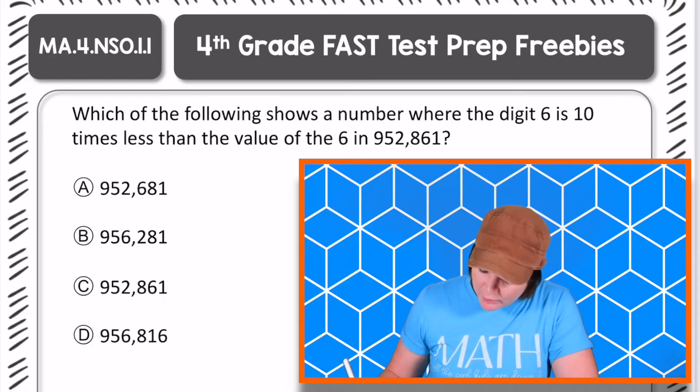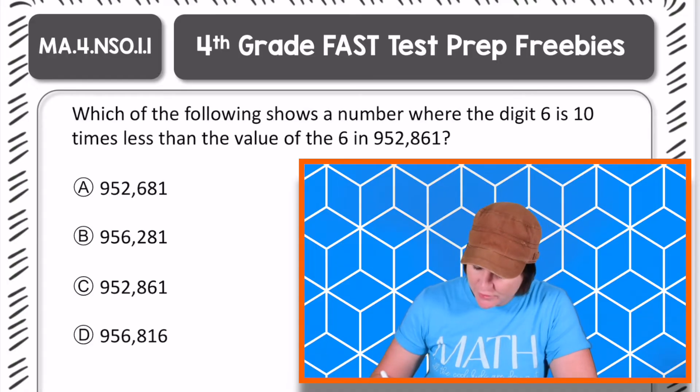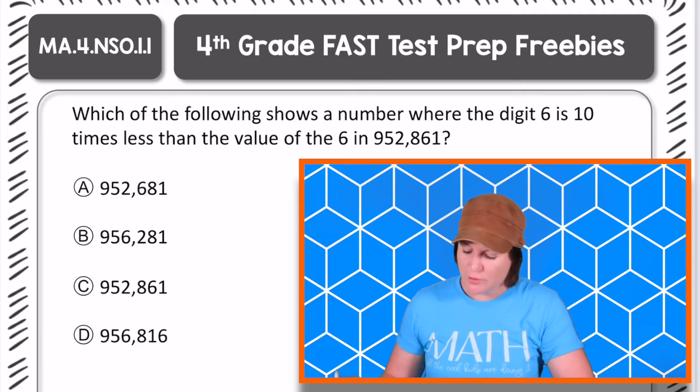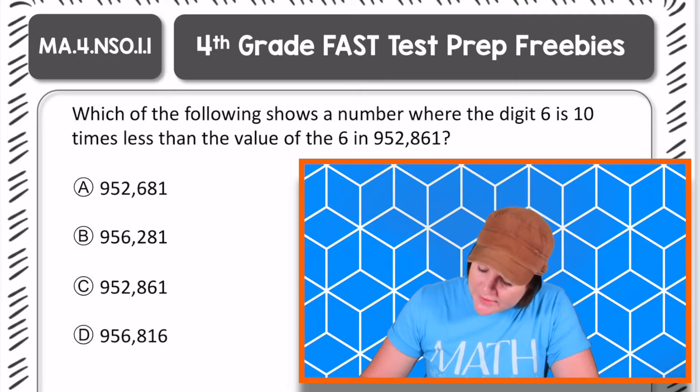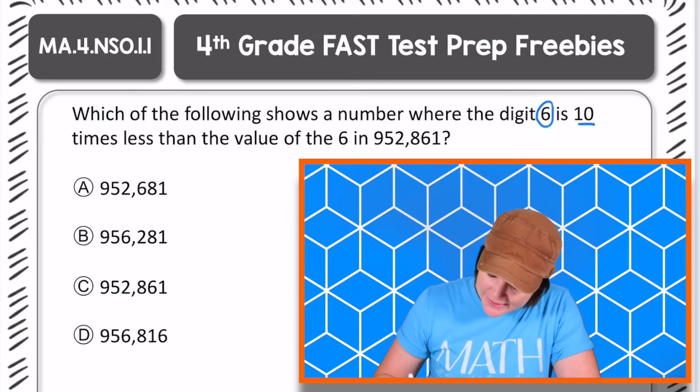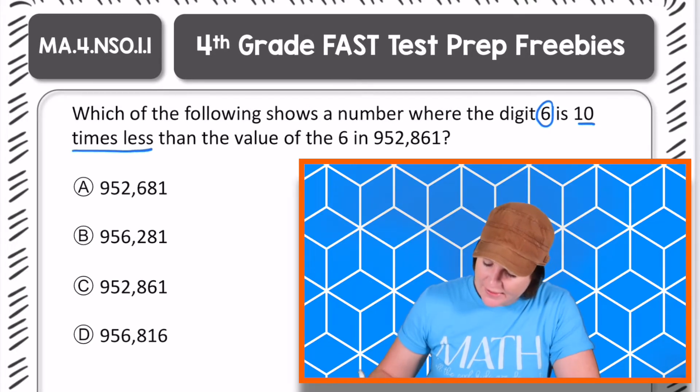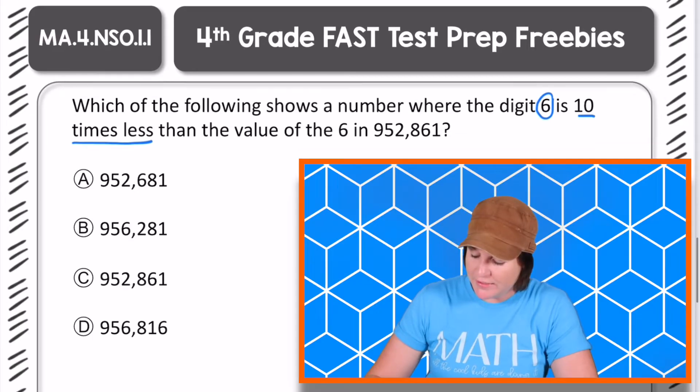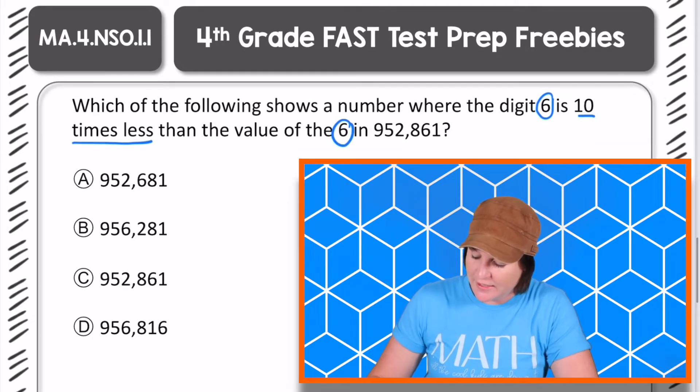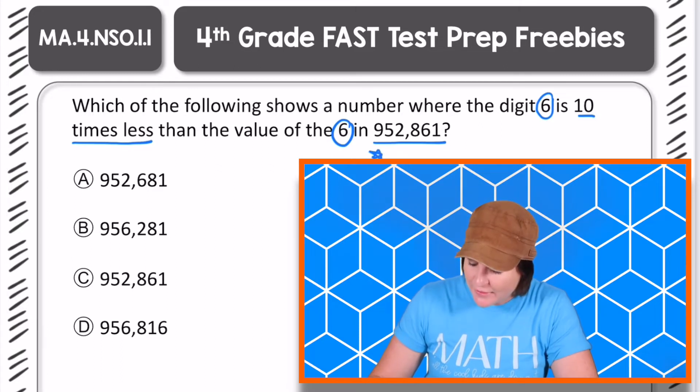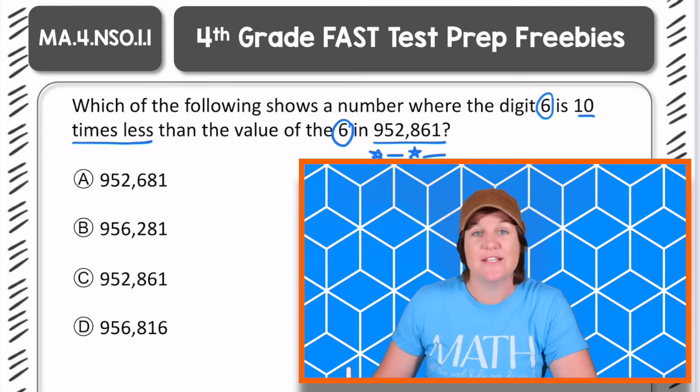So it says, which of the following shows a number, so A, B, C, or D, which of those shows a number where the digit 6, digit 6 is 10 times less than the value of the 6 in this number right here, 952,861.